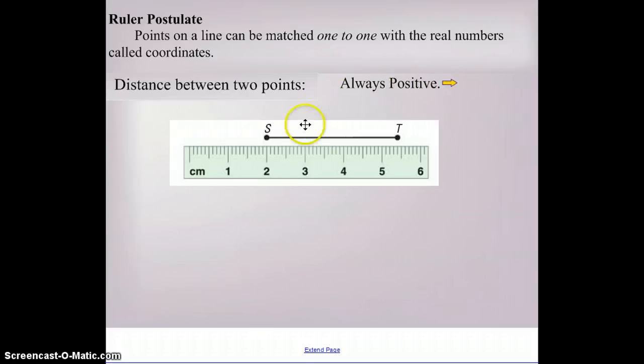We should recall that the distance between points is always going to be positive. Right now, s is located at two centimeters and t is located about five and a half centimeters, so that might even be 5.4. The distance between t and s is the difference between those points, so it's three and a half or a little closer, probably 3.4.